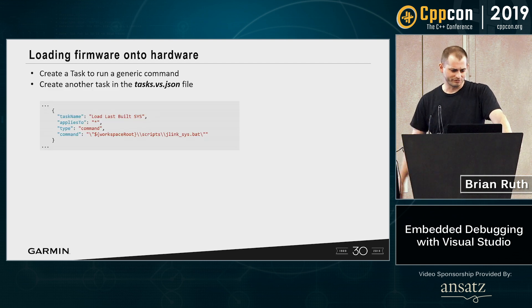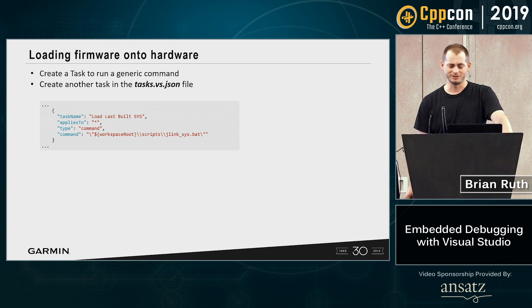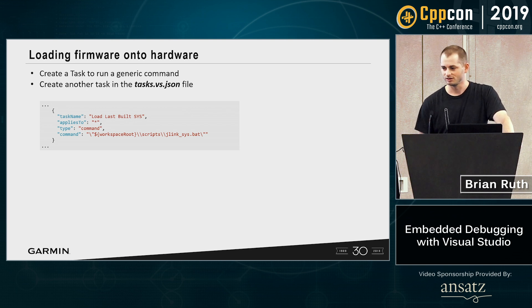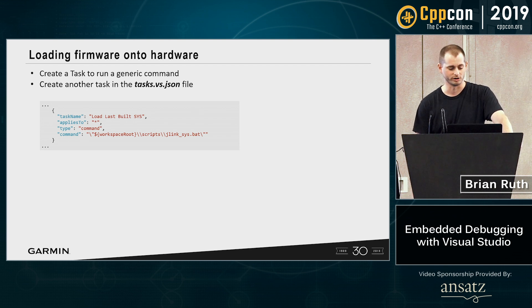Once we've got our firmware built, how do we get it on the device? We could back out into a command line, or we could just create another task. This one's another generic command that applies to everything, and we're going to launch it to forward everything over.